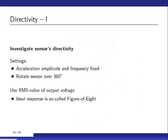We can also look at the sensor directivity, because we said we want to have one degree of freedom for our accelerometer, so the question is, do we really have achieved that? So what we did was, we fixed the amplitude and the frequency of the acceleration, and we rotated the sensor over 360 degrees, and we looked at the RMS output value. And ideally, you would get, you want to achieve, a so-called figure of eight.